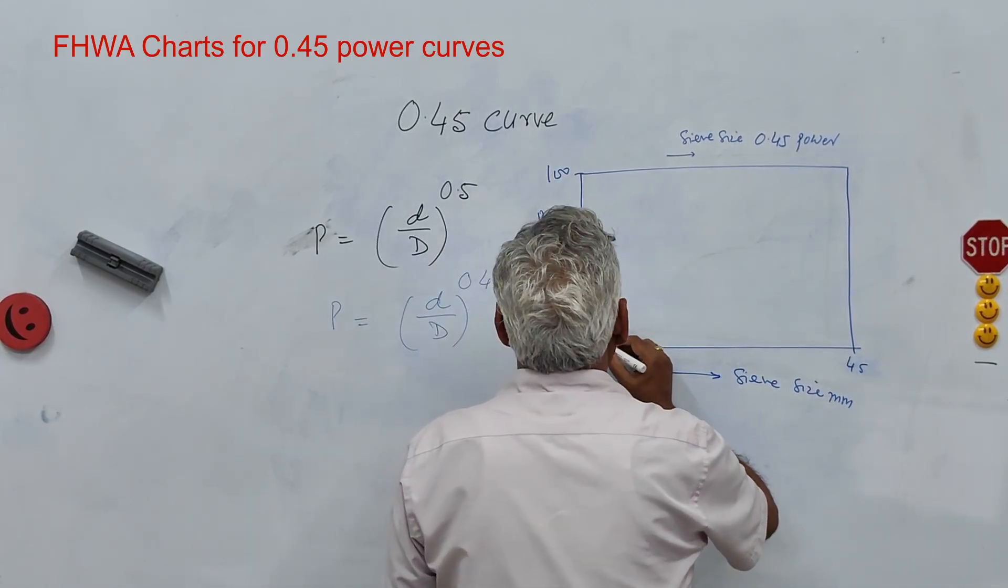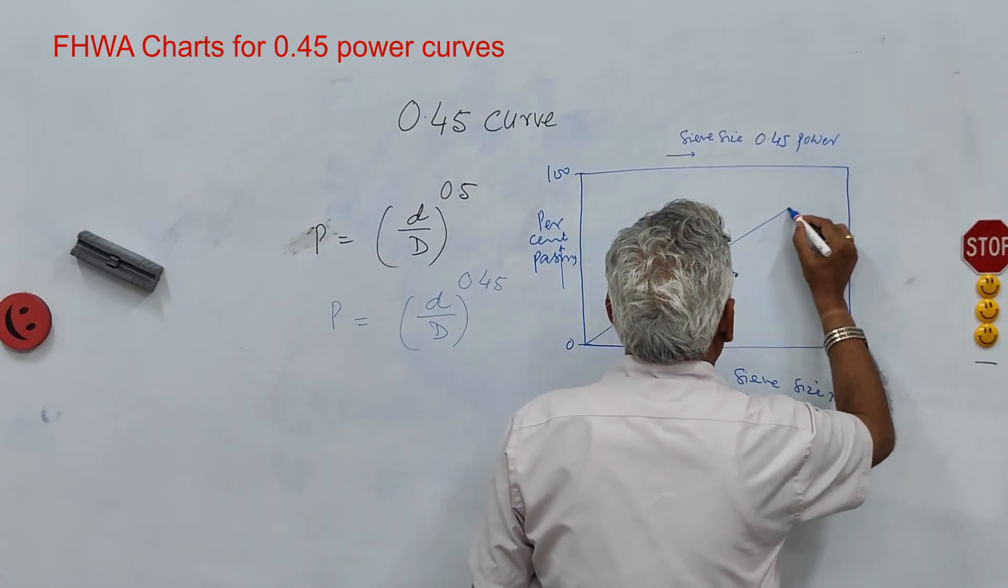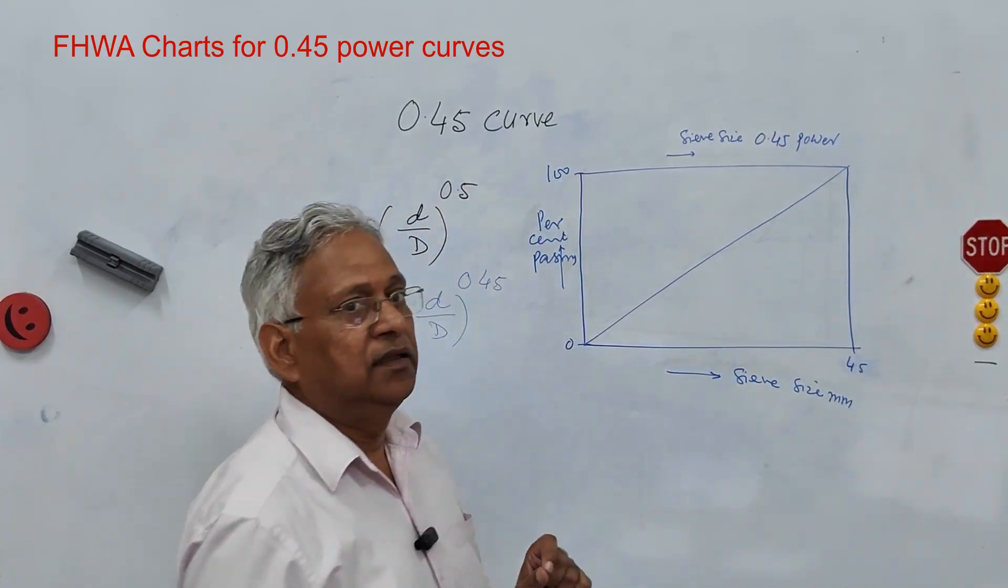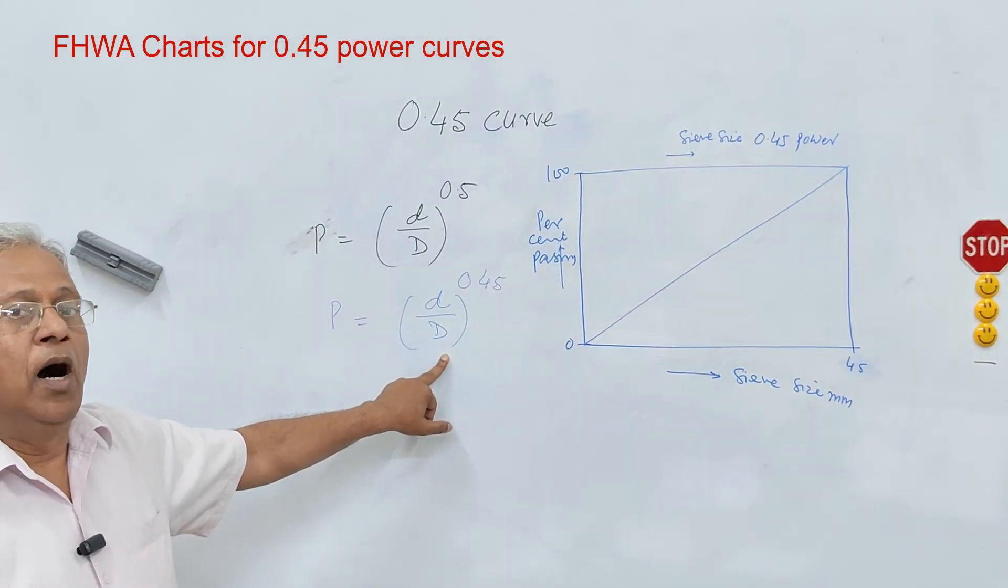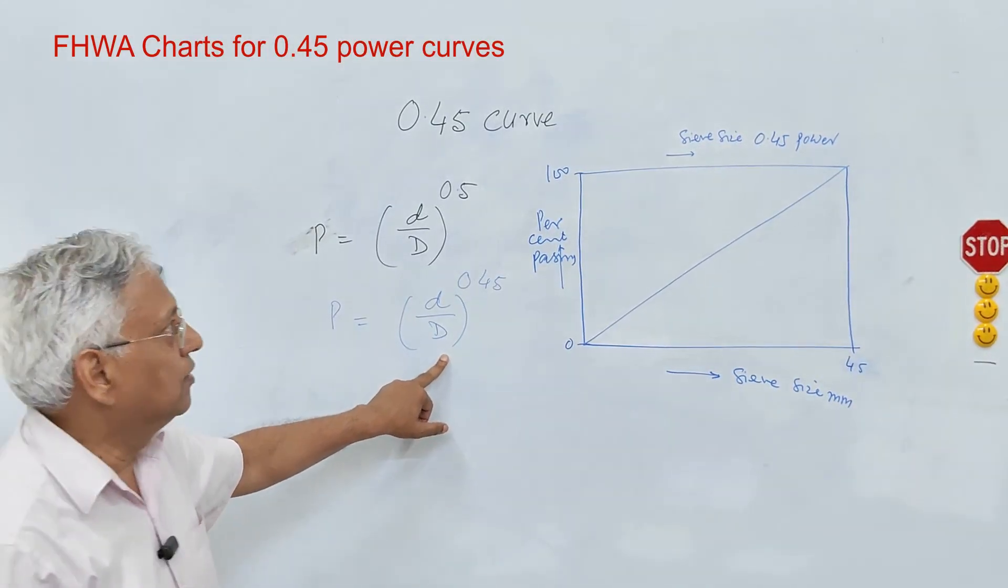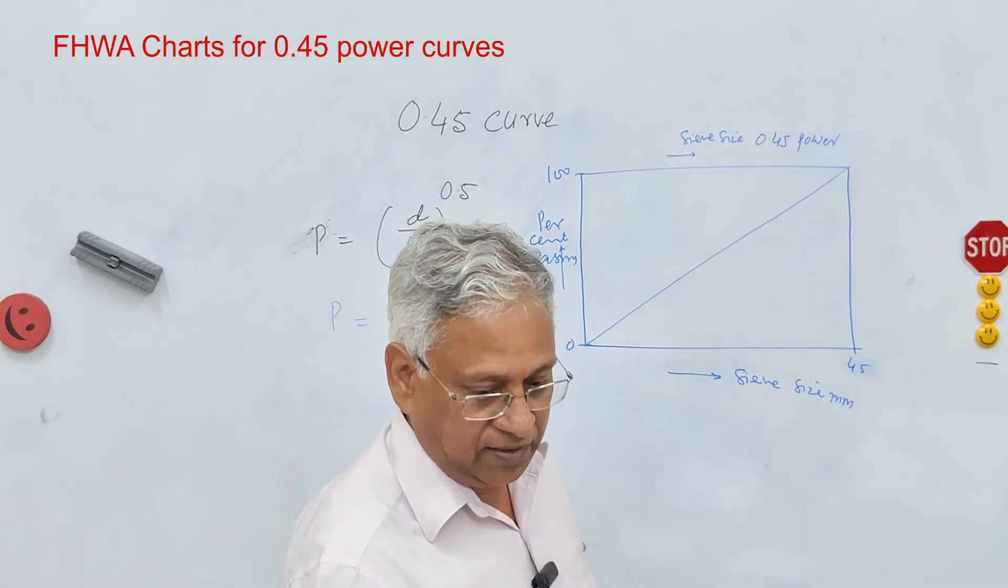If you join this diagonal here that gives you the complete grading as per this equation. How it is developed? Now let me just take one example.